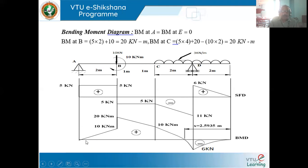By joining these points — by straight lines for point loads and parabolic curves for UDL regions — we get the bending moment diagram. For the UDL section, the curve crosses the reference line somewhere. The point where the bending moment curve crosses the zero reference line is the point of contraflexure or point of inflexure, where bending moment equals zero.